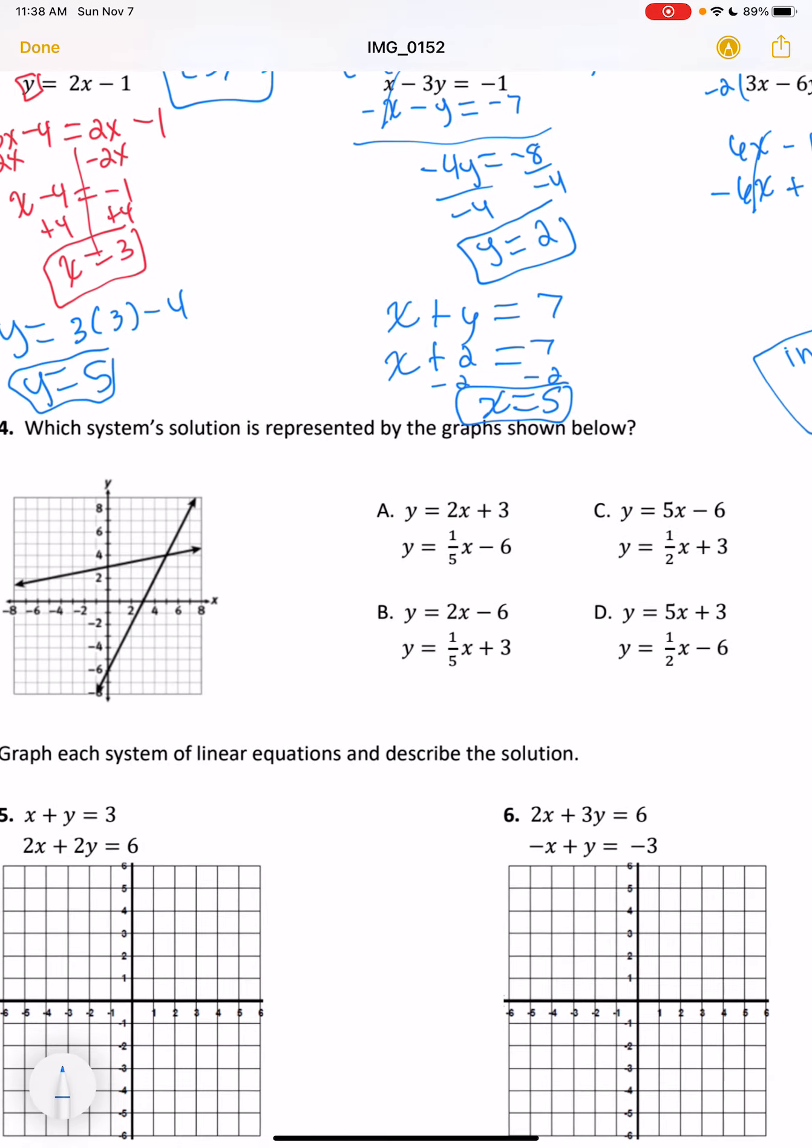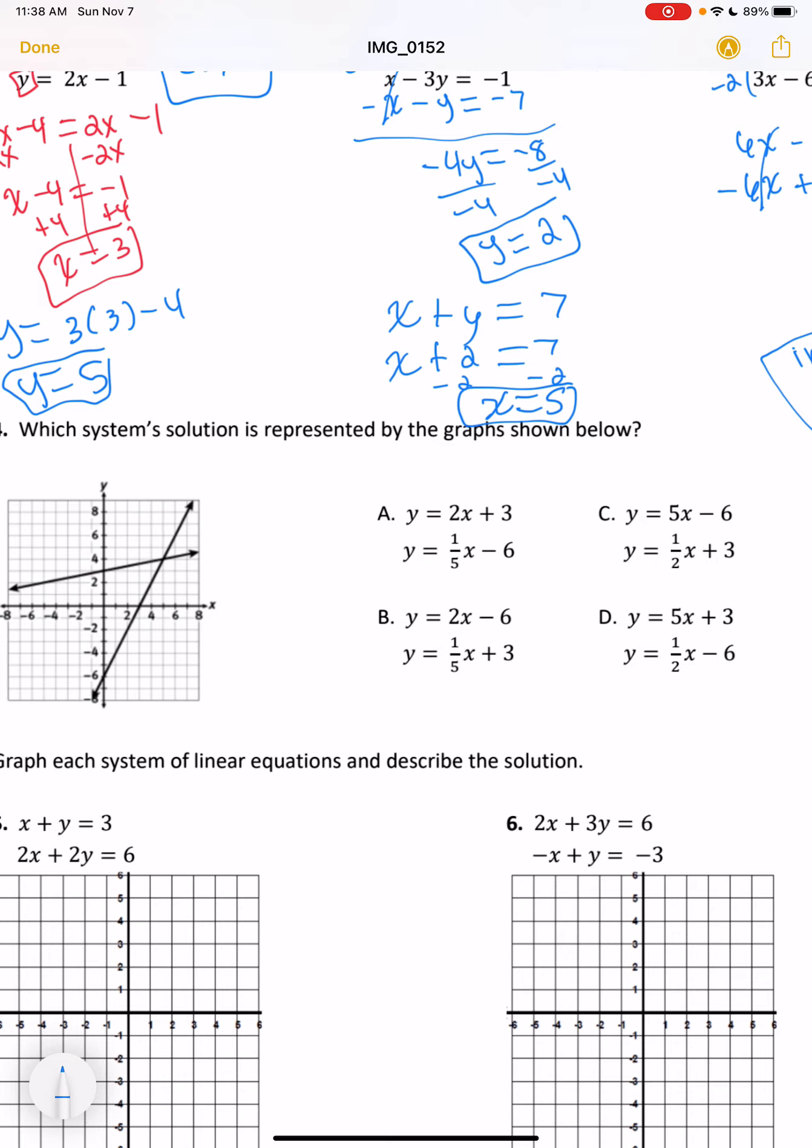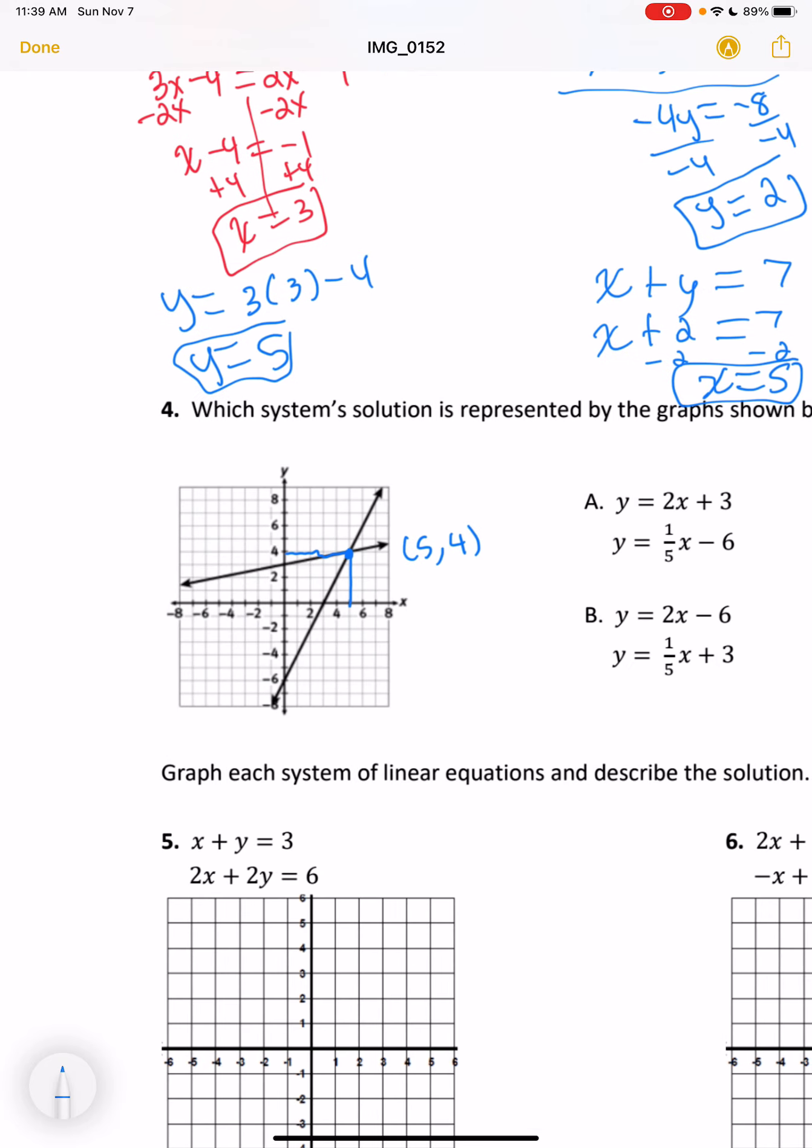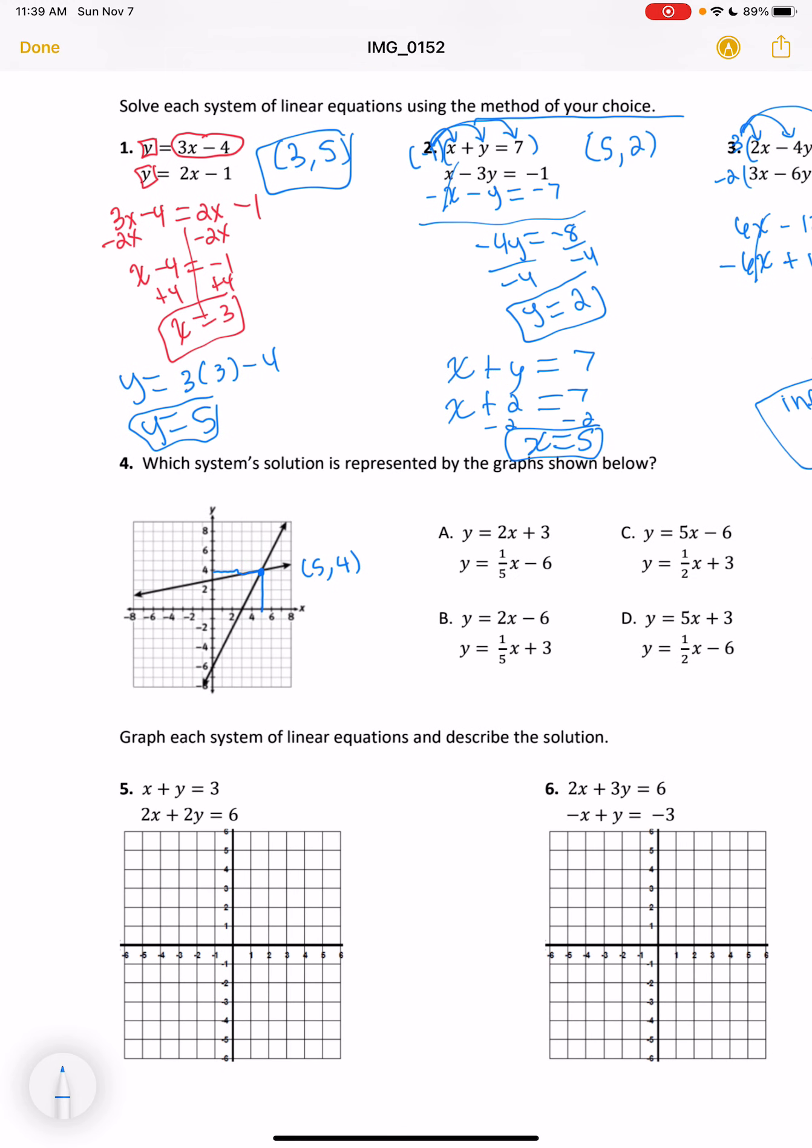Number 4 is asking which system's solution is represented by the graph here. So the actual solution, just in case they ask, would be 5 and 4. So there's a couple ways you can think about it. You could plug this into all of the equations, but that would take a lot of effort and see if 5 and 4 make sense for x and y.